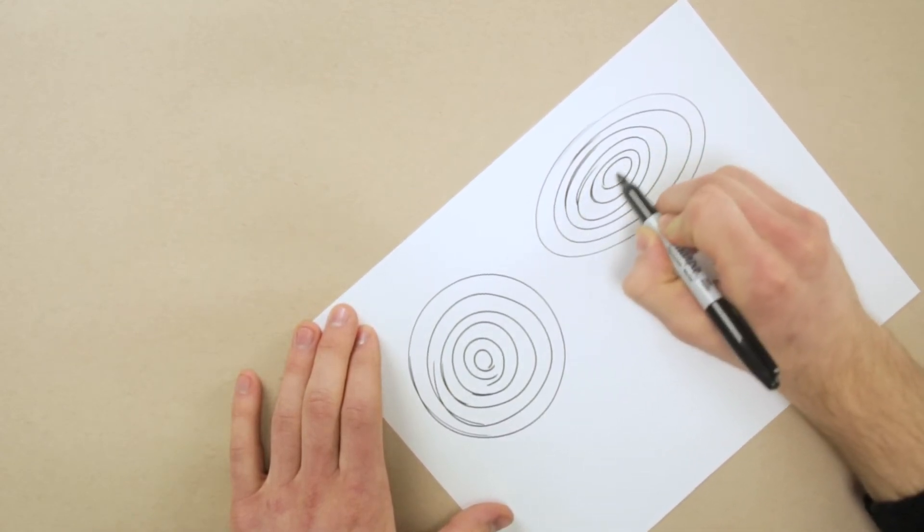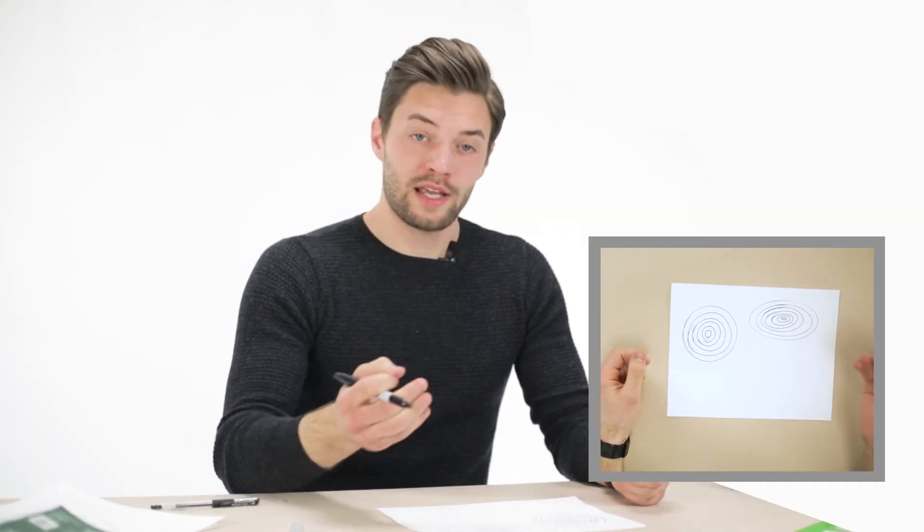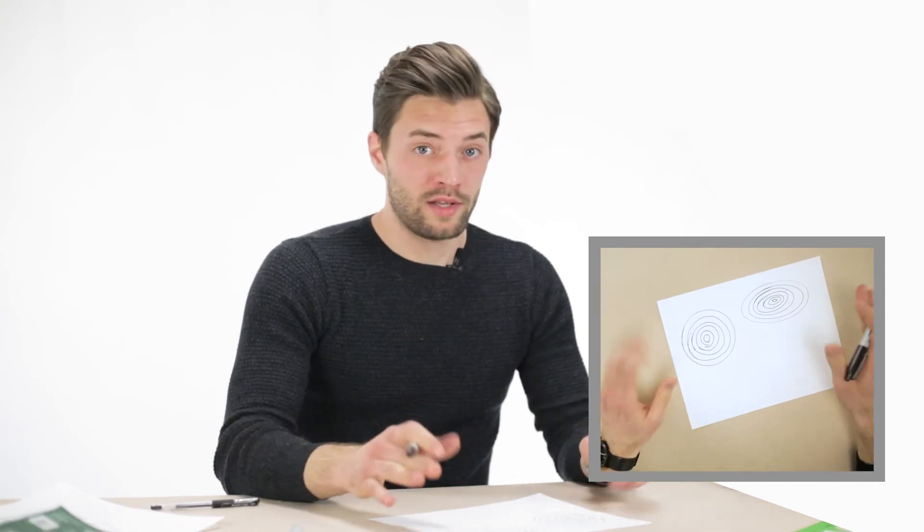You can tell they get a little bit faster as they get smaller. This is just one other way in which you can practice making your lines tight, consistent, and confident and, over time, hopefully concentric.